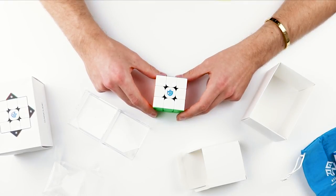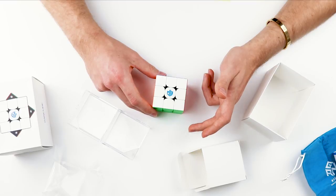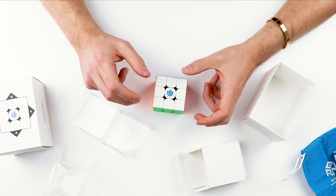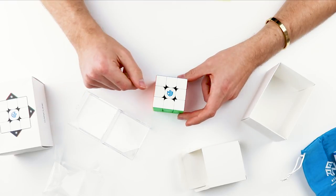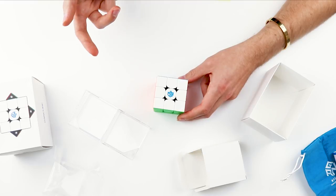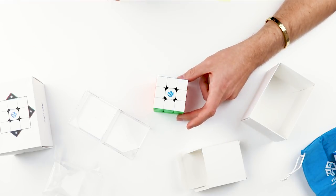And that's about it. The 356M is pretty straightforward. It is nice to see that GAN is taking steps to make some of their most popular cubes available to more people by reducing the price. In my opinion, I do think that the 356M is a bargain for what you're getting, and I think that the removal of the GMS magnets is not that big of a deal because most people use the yellow magnets anyway.